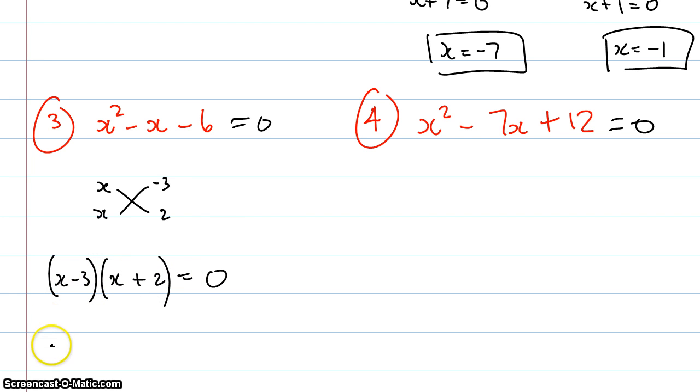And then I get x minus 3, x plus 2, equals 0. So again I use the null factor law and I'm going to say that x minus 3 equals 0 and x plus 2 equals 0. So that means that x equals 3 and x equals negative 2.